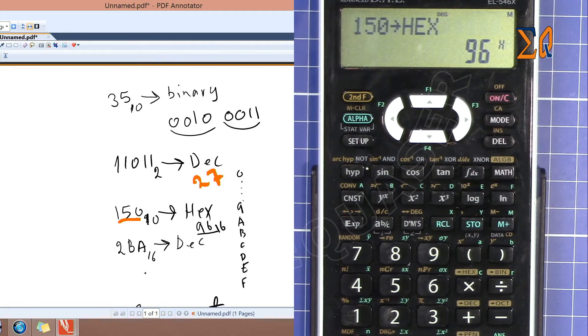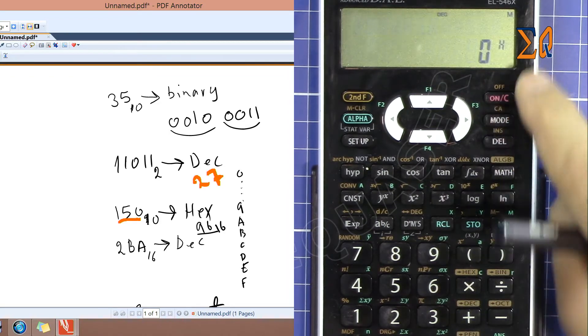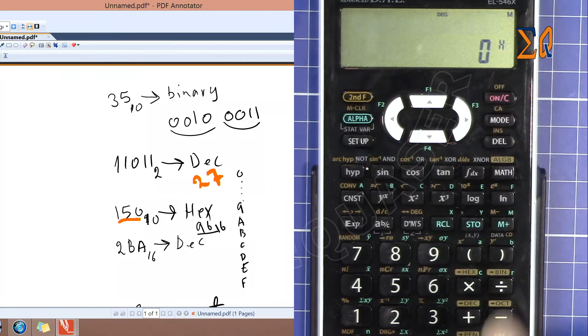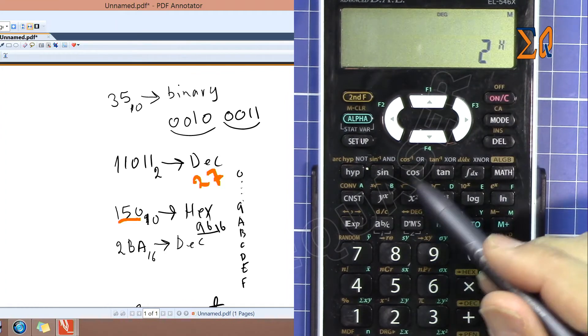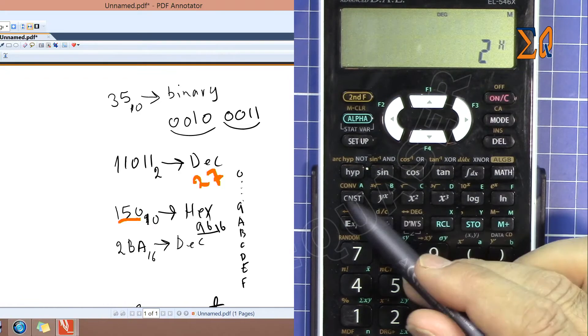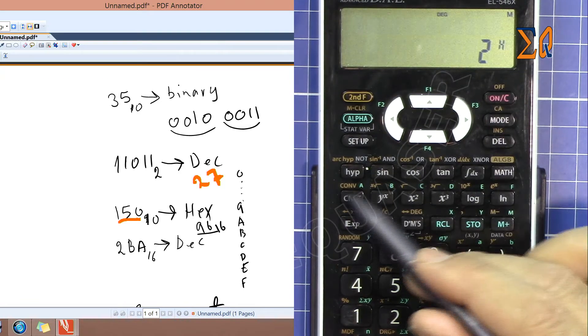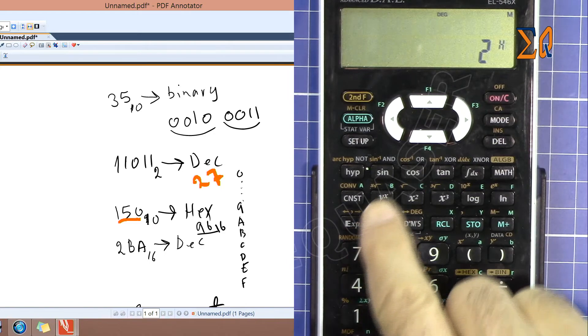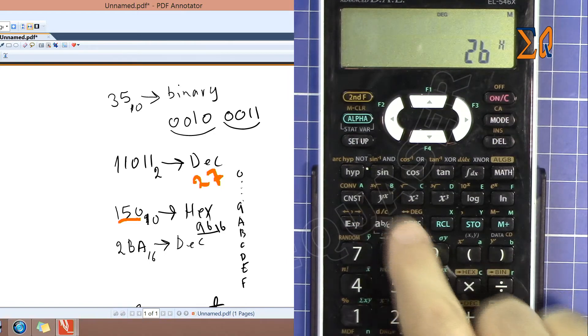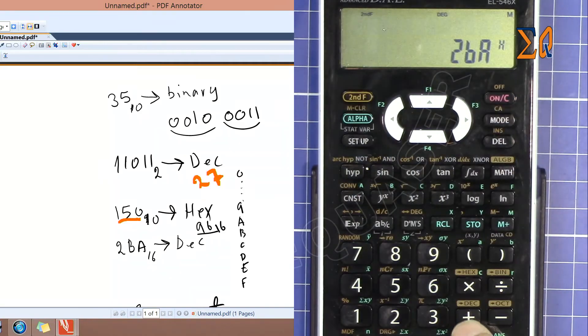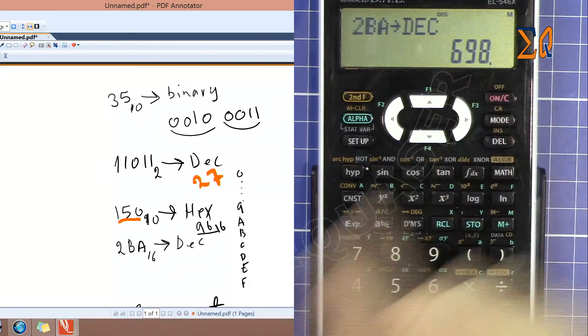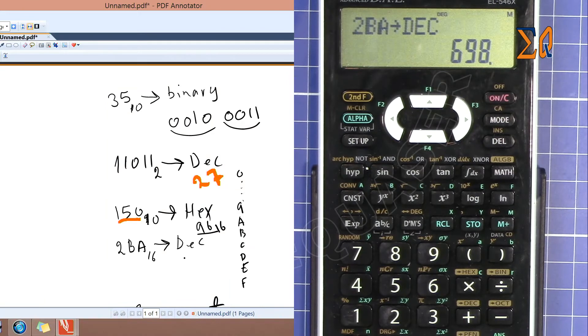This is hex, it has A and B. Now I'm already in hex. If not, just press that. You must be in hex in order to enter hex. So 2, B, A. To enter B, A, B, C, D, E, they are automatically available for hexadecimal. So 2B and then A. The value has been entered. Plus second function and then decimal. This is 698 base 10, which is decimal.